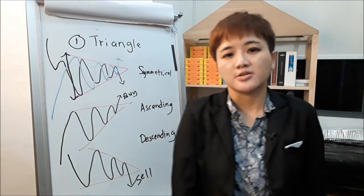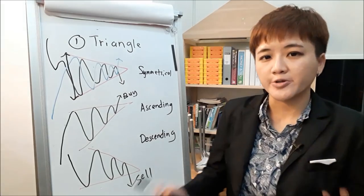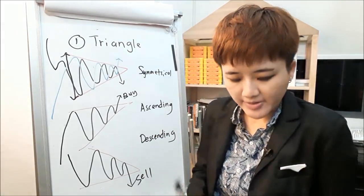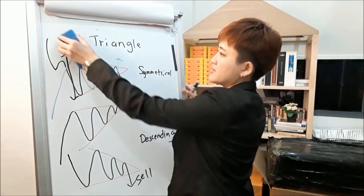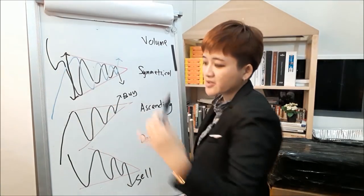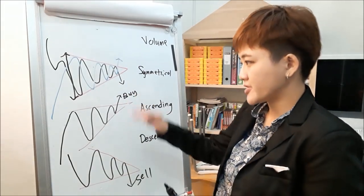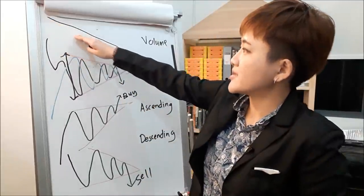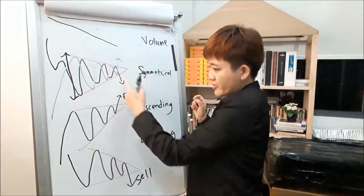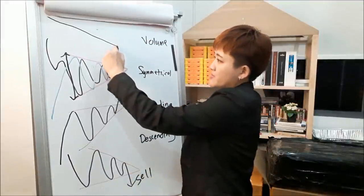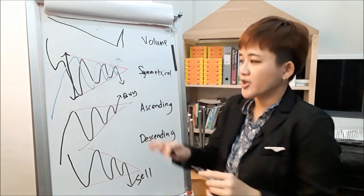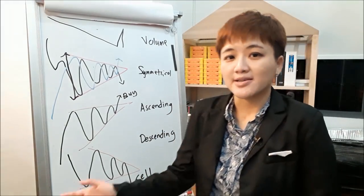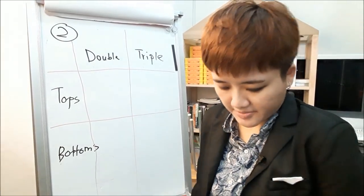For volume on these three triangle patterns, a legit pattern starts with relatively high volume that gradually decreases as the pattern forms, and then when it breaks above or below the volume spikes. If you don't see a volume spike on a breakout, it's likely a false breakout or a fake pattern.